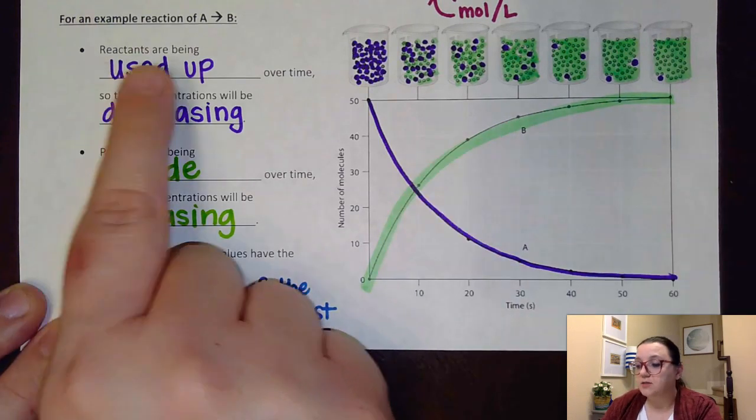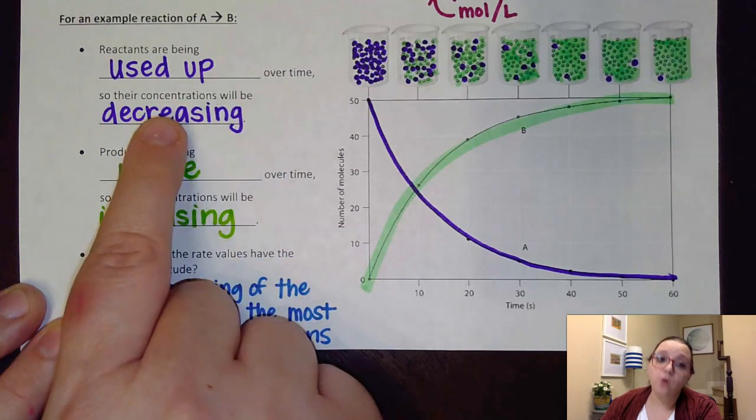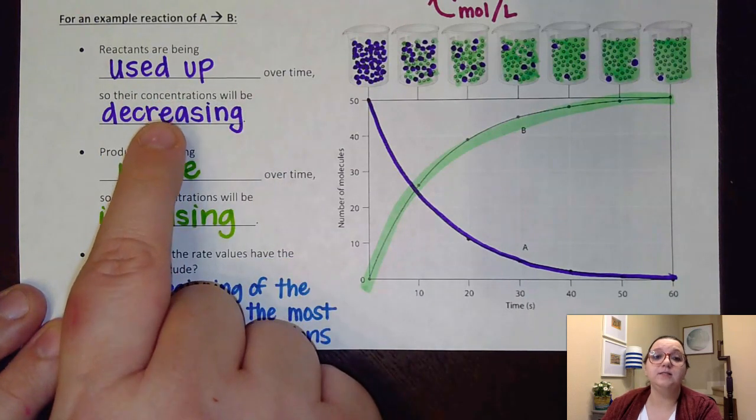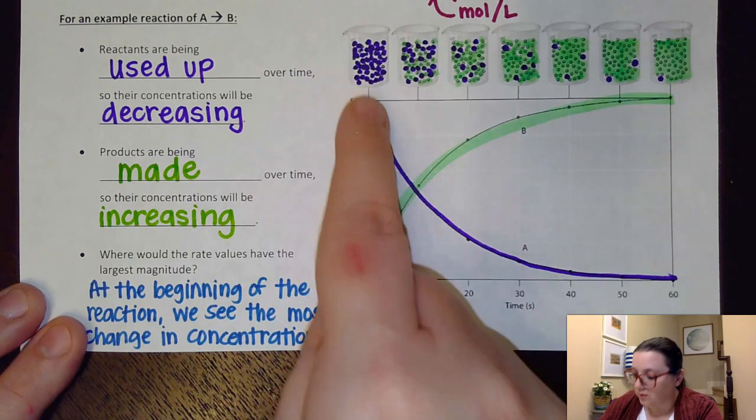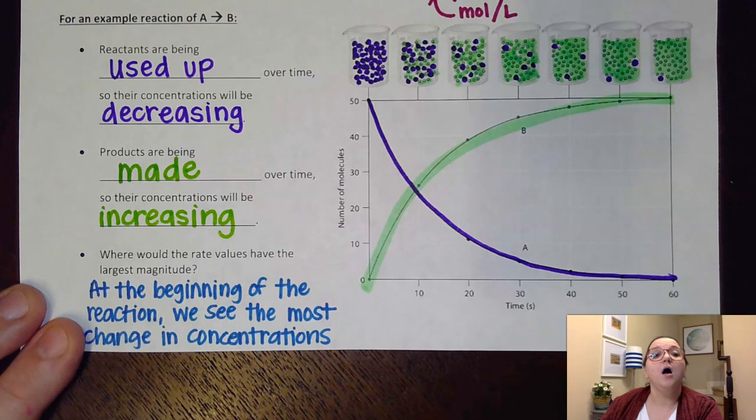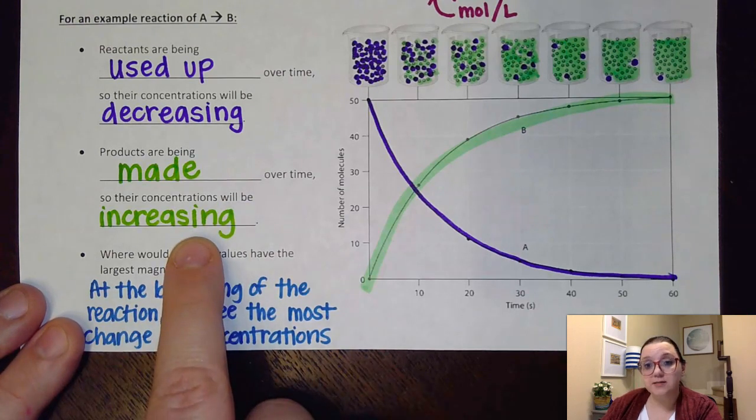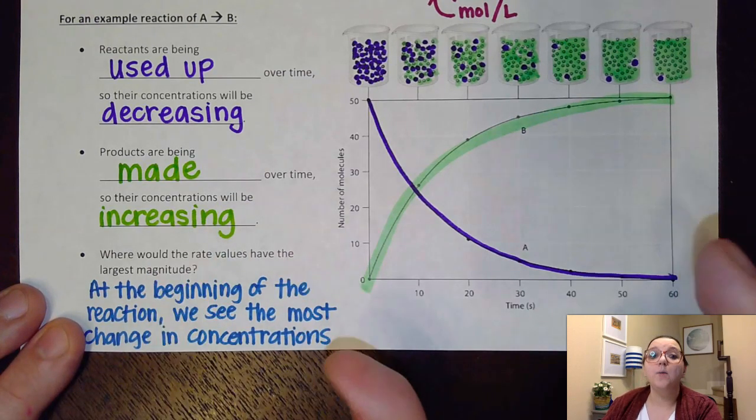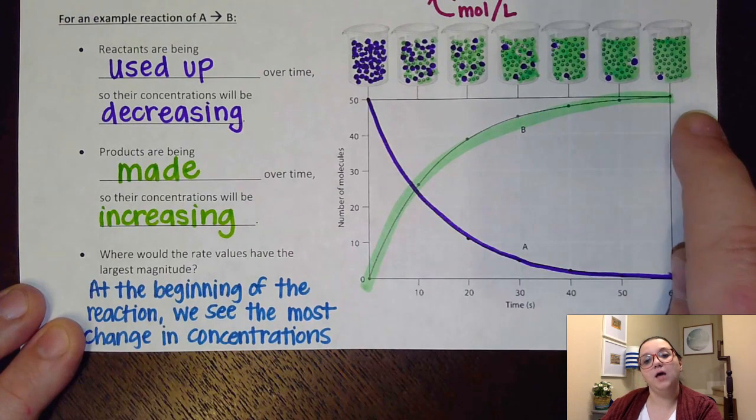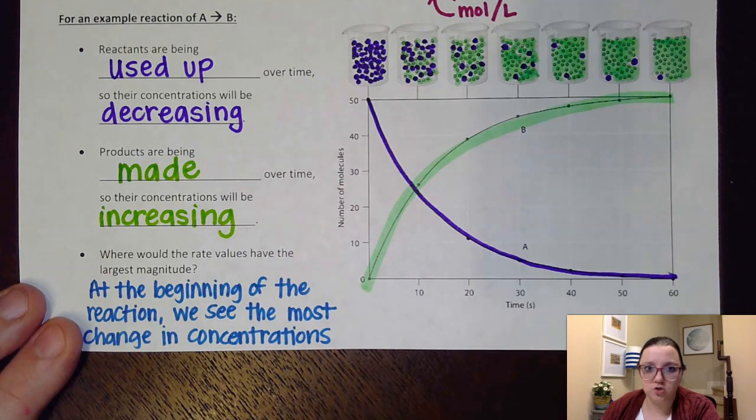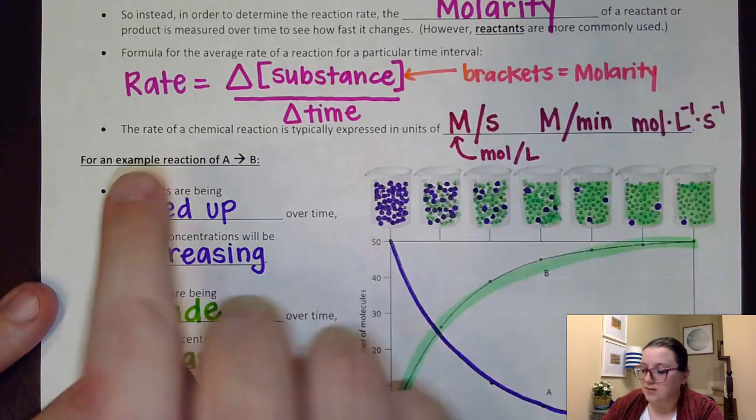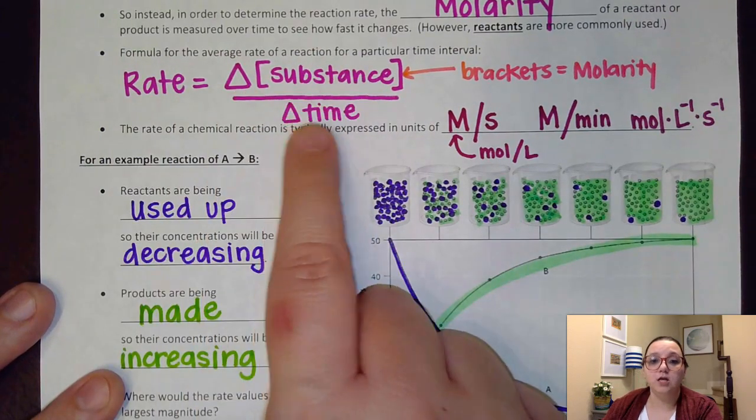So again, reactants are being used up over time. And so you will always notice their concentrations decreasing on these graphs. So if you ever wanted to pick out a reactant on a graph like this, you would be looking for a curve that's going down. On the flip side, products are being made over time. And so those concentrations should be increasing. So if you're ever trying to pick out a product on these graphs, you're looking for something that's going up. But you notice it's making kind of an exponential curve here. It's not a straight line.